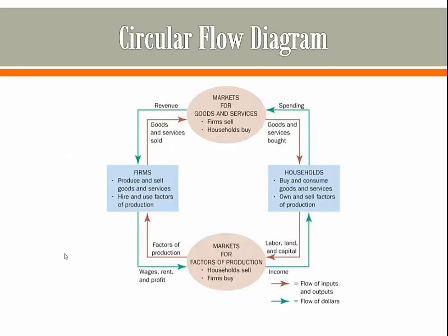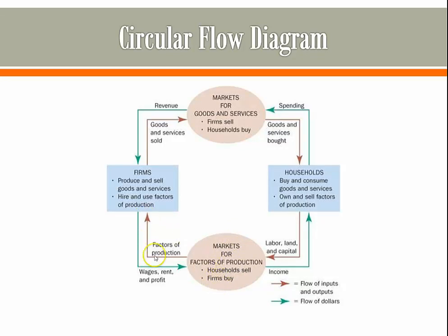The last topic I'll be covering today is the circular flow diagram. In the circular flow diagram, it models the flow of resources and money. There are four main entities: the markets for factors of production, the markets for goods and services, businesses and firms, and households. There are two arrows — one models money and the other models inputs and outputs. Starting with the green arrow: firms pay wages, rent, and profit to markets for factors of production. They need labor, land, and capital, and they buy it from the market.